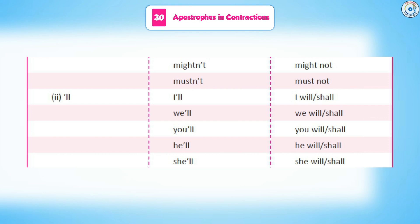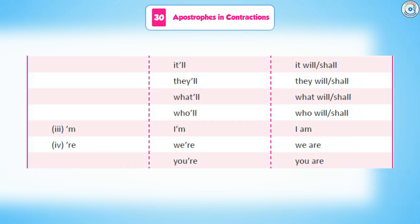Apostrophe + 'll contractions: I'll (I will or shall), we'll (we will or shall), you'll (you will or shall), he'll (he will or shall), she'll (she will or shall), it'll (it will or shall), they'll (they will or shall), what'll (what will or shall), who'll (who will or shall).